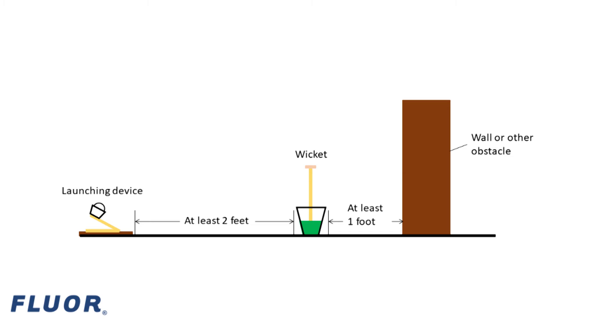The launching device must be at least two feet from the wicket and the wicket must be at least one foot from any nearby obstacles like walls or furniture.